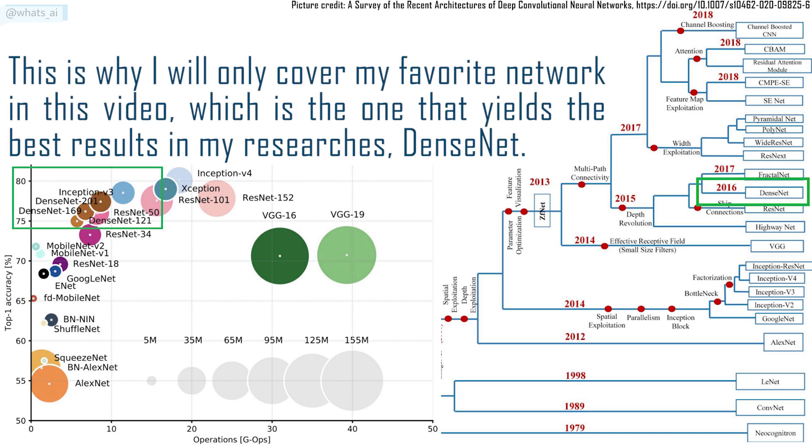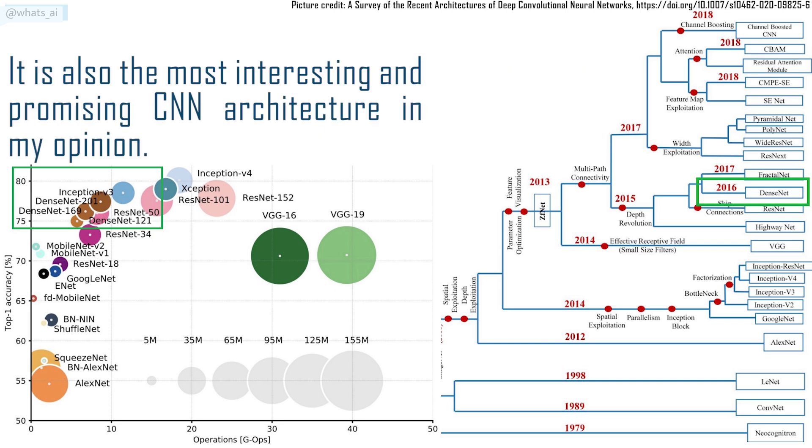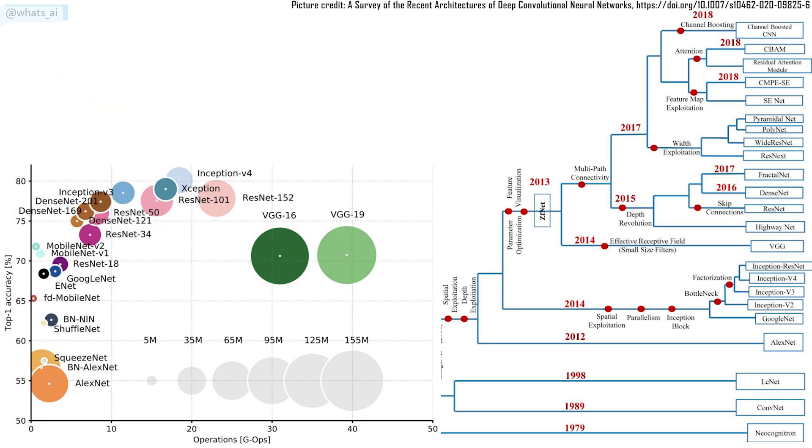This is why I will only cover my favorite network in this video, which is the one that yields the best results in my research, DenseNet. It is also the most interesting and promising CNN architecture in my opinion. Please let me know in the comments if you would like me to cover any other type of network architecture.